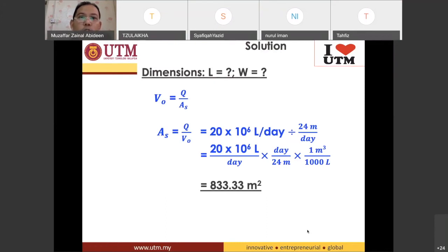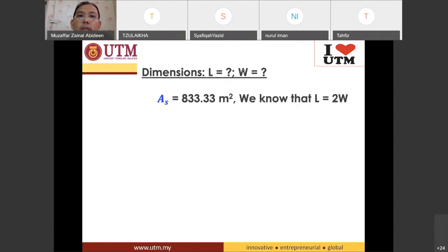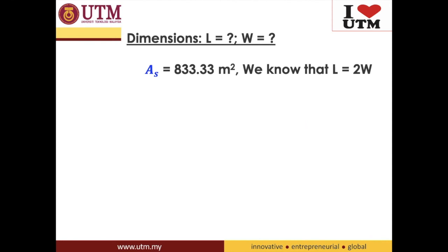So we have not finished because we need to find out the length and the width. So you know that AS is actually length times width. Can I continue? Can I proceed? Yes. So AS is 833.33 meter square. We know that L is equal to 2W. That means this value, the AS is equal to L times W.